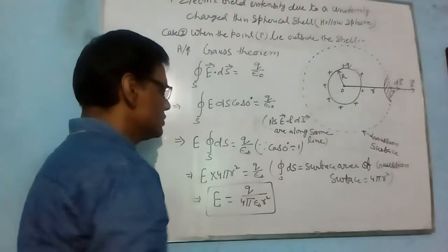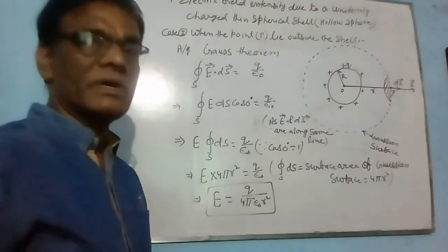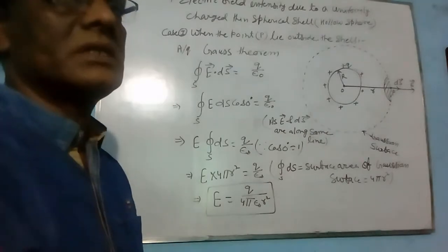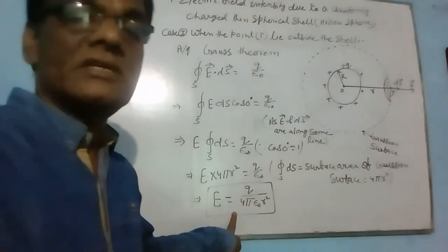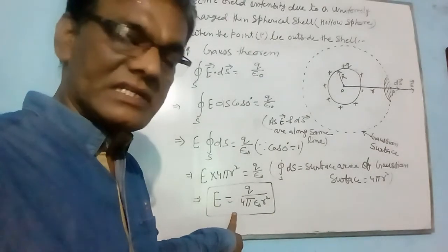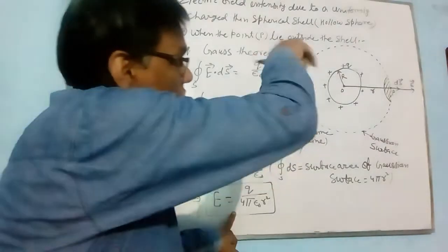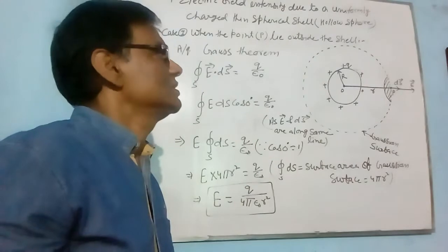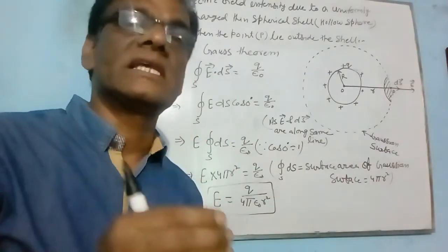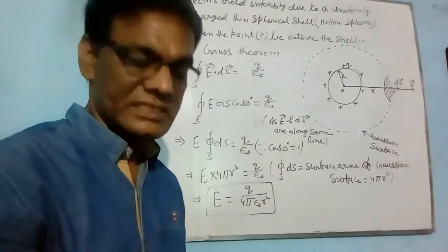E equals to Q by 4πε₀R². This is the required expression of electric field intensity due to the charged thin spherical shell at a point lying outside the shell.